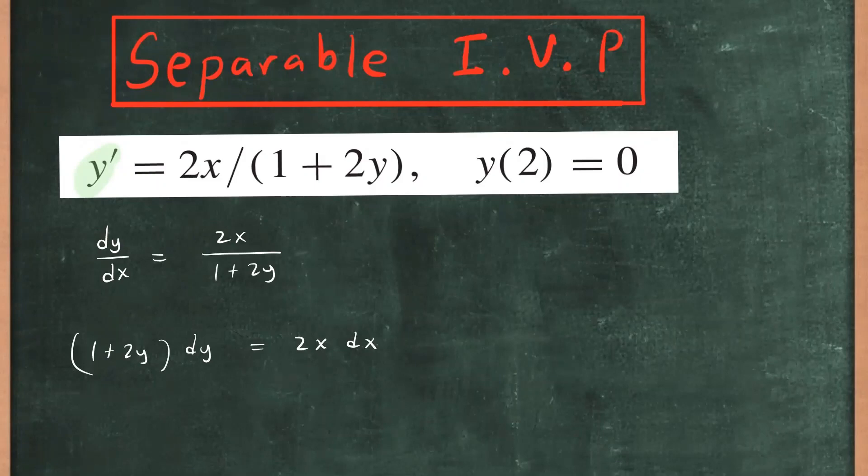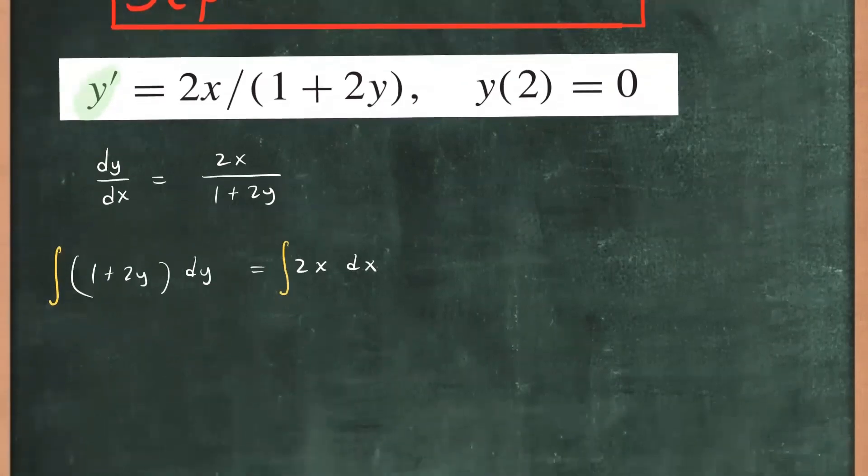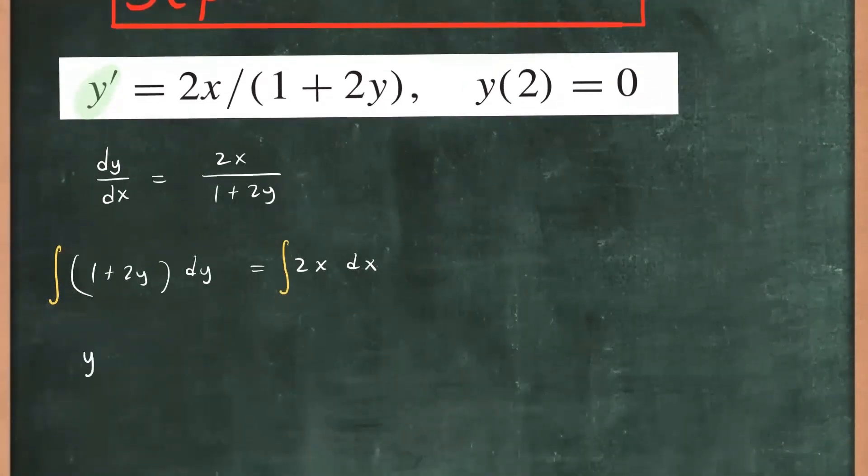Here you have a function of y with dy, and here you have a function of x with dx. Now that we have done that successfully, we can now integrate both sides with its respected variable. So here we integrate respect to y, and here we integrate respect to x. So the integral of 1 respect to y will simply be y, and integral of 2y respect to y will be y squared. Hold on to plus c, we're going to put that at the end.